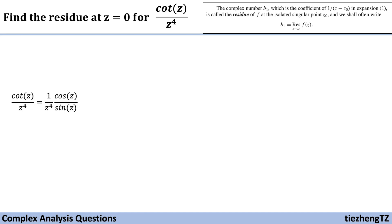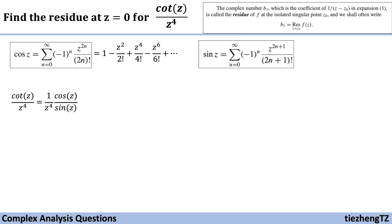We all know that cotangent z equals cosine z over sine z, and we also know the expansion forms of cosine z and sine z. So the first step for this question is that we just need to substitute cosine z and sine z into this function.